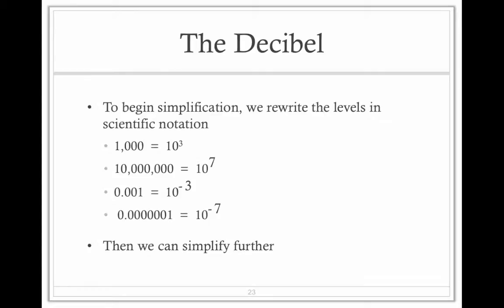So to begin the simplification, we rewrite these levels in scientific notation. So 1,000 becomes 10 to the 3rd, 10 million becomes 10 to the 7th, 0.001 becomes 10 to the negative 3, and that other number is now 10 to the negative 7th.